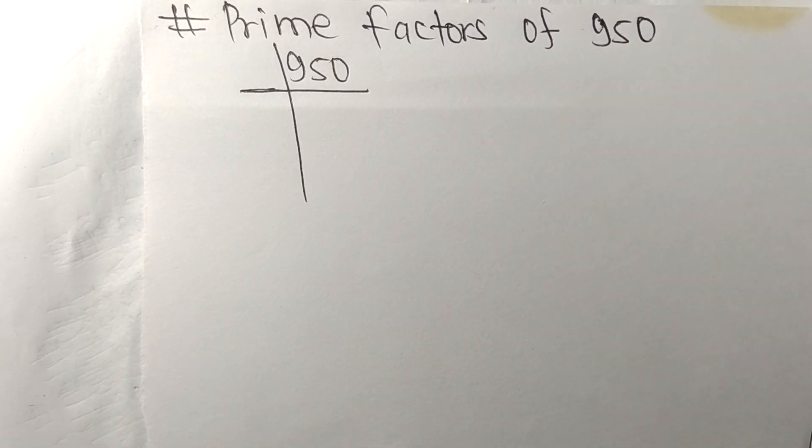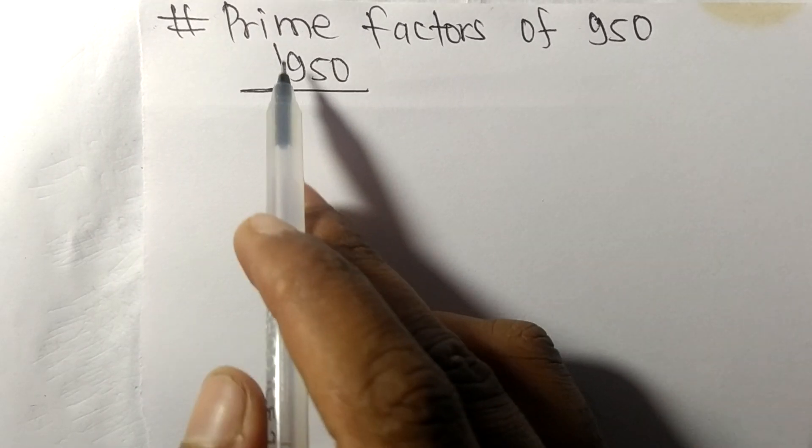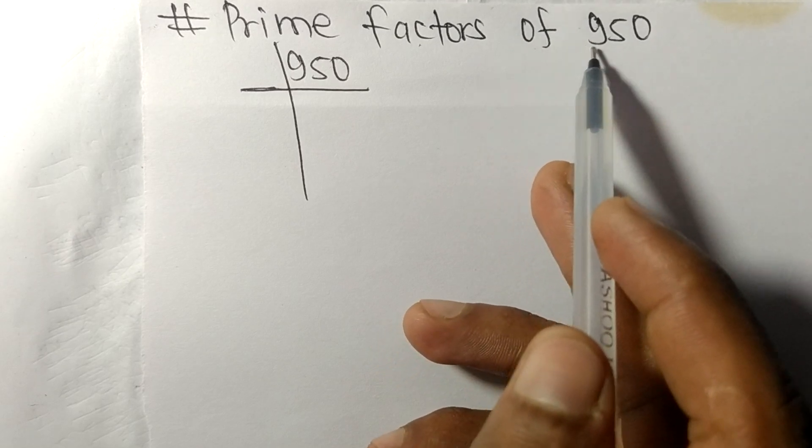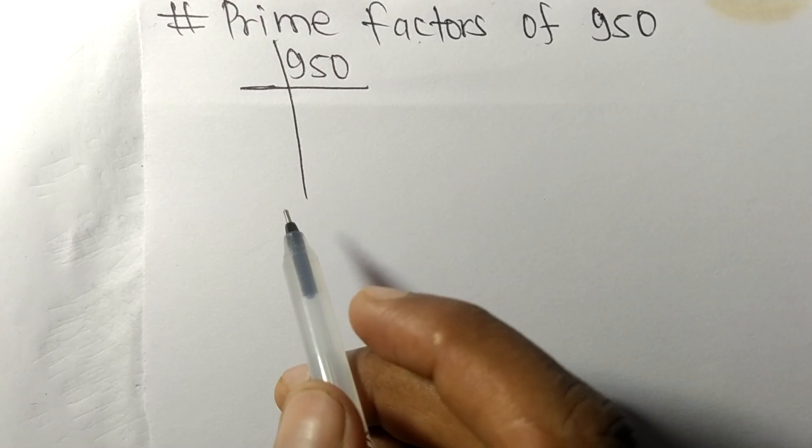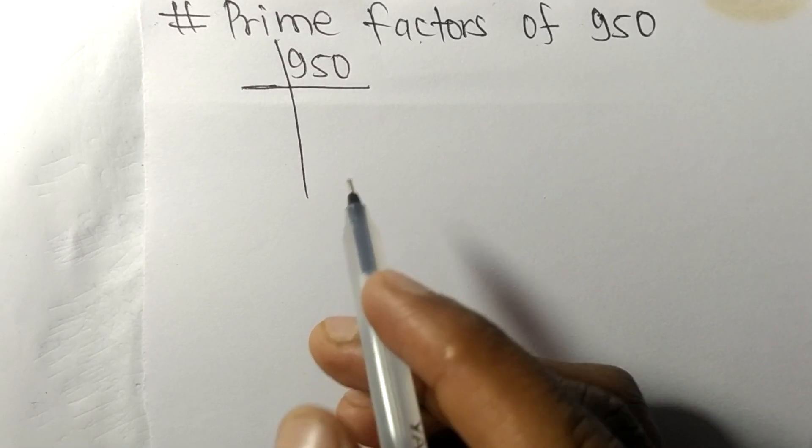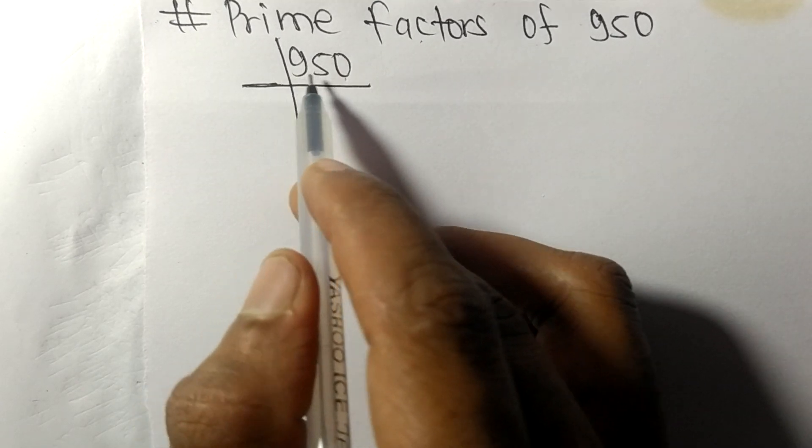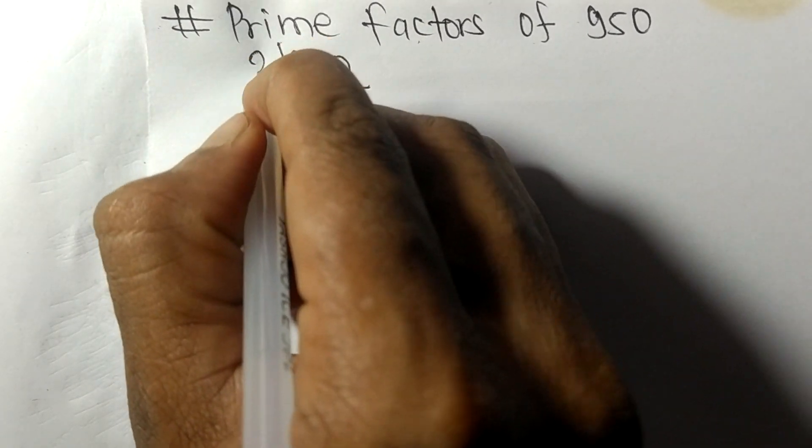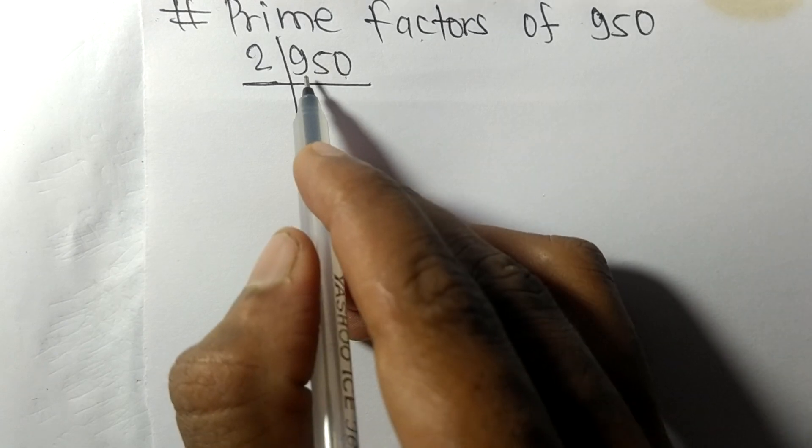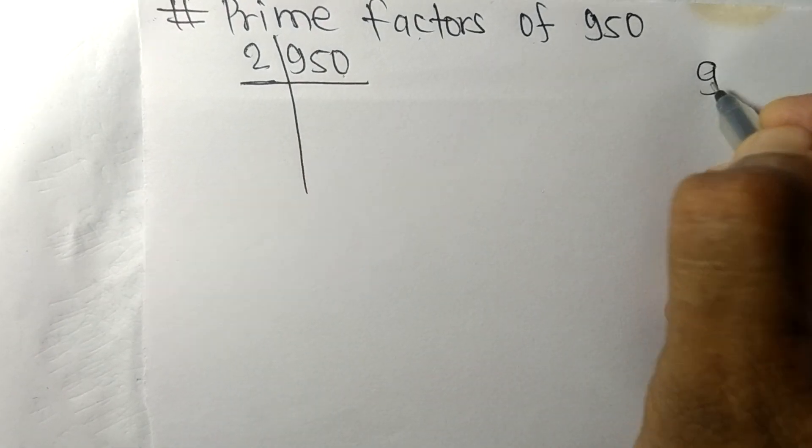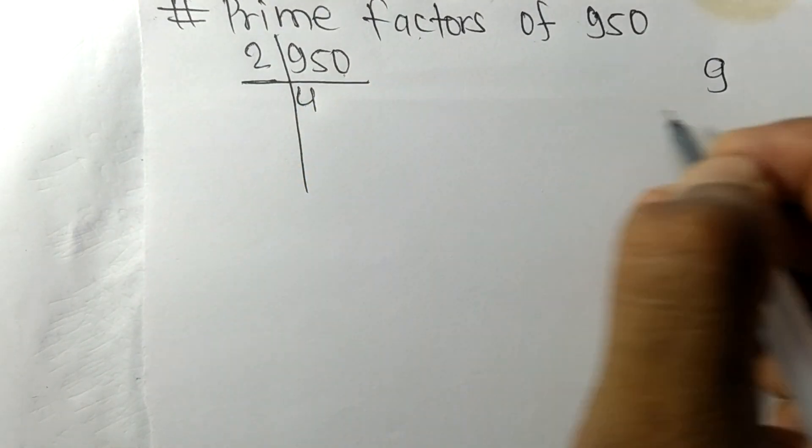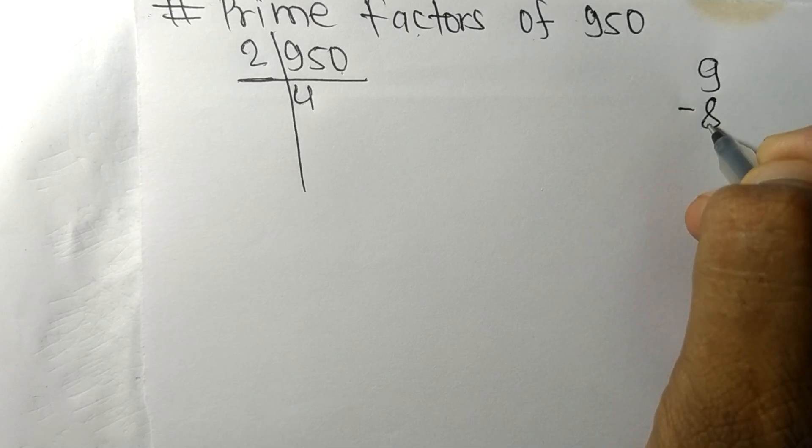So today in this video we shall learn to find the prime factors of 950. So 950 contains zero at last, so it is exactly divisible by two. So first we have nine. Two times four means eight. On subtracting we get one.